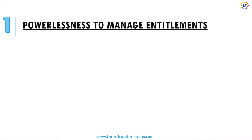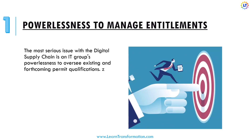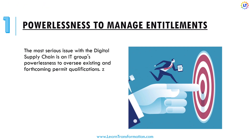The last challenge, number one, is powerlessness to manage entitlements. The most serious issue with the digital supply chain is an IT group's inability to oversee existing and forthcoming license entitlements. Many organizations have no component setup that auto-catches and standardizes entitlements, and many don't have a proper entitlement process set up. Improperly dealing with your license entitlements comes with a huge number of consequences, such as missing versions and releases, erroneous license types, improper application linking, and the manual formation of precise license information.